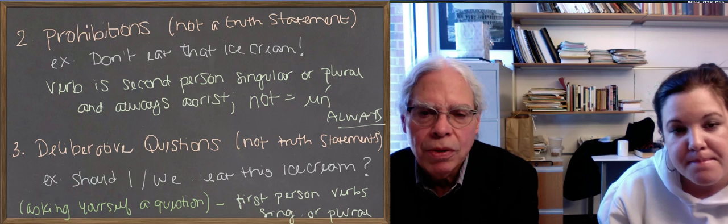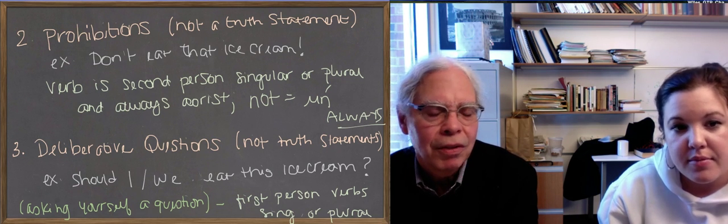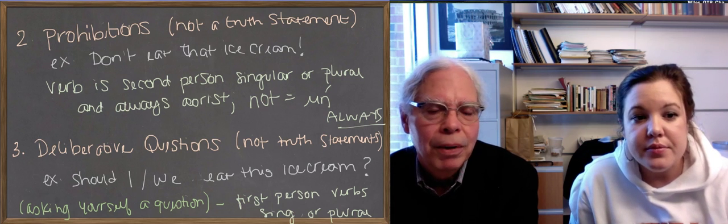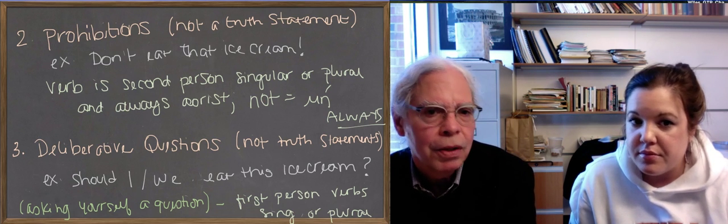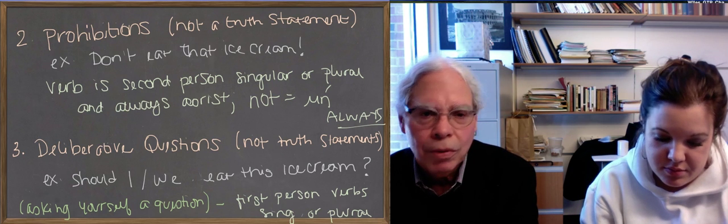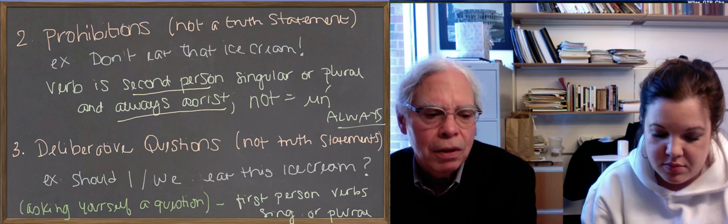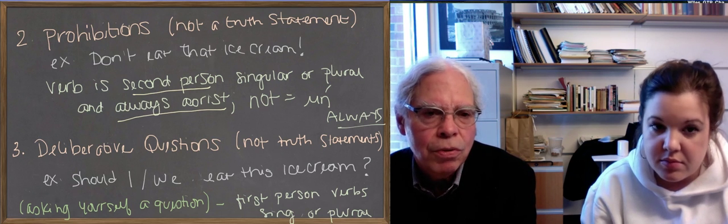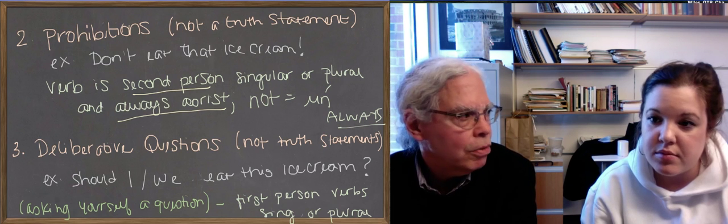The second one is prohibitions, that is negative commands, telling people not to do something, instead of urging them on. And in this case, the verb is always in the second person singular or plural, and it's always aorist. So don't eat that ice cream, but you'd put the verb eat in the aorist subjunctive, and you'd use the negative mē. Since it's not a true statement, you can't use u.